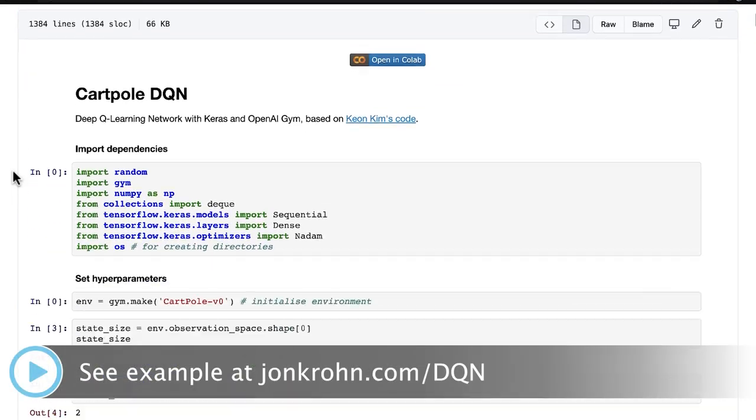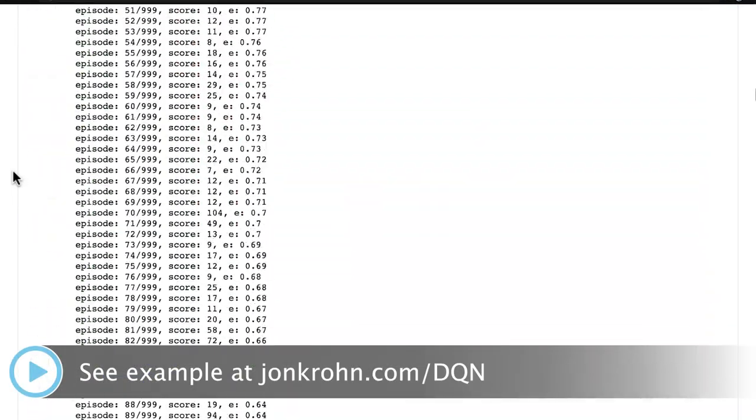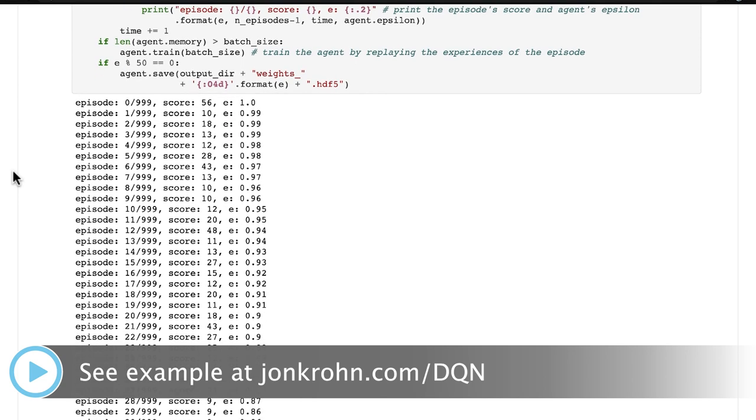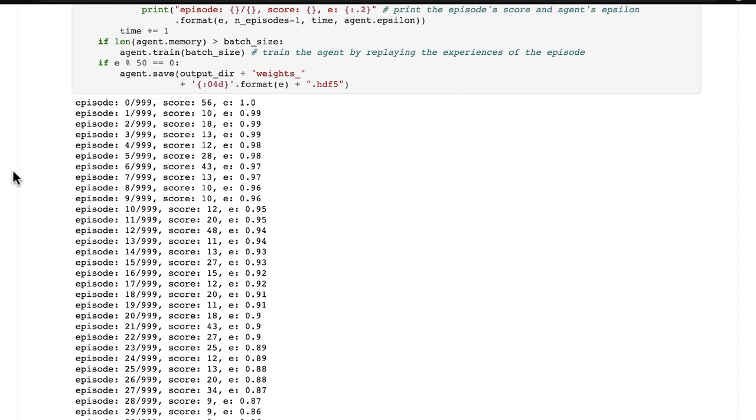That brings us to an example of something called a deep Q-learning network, which is a reinforcement learning algorithm. The idea in reinforcement learning is that we're trying to maximize some reward.